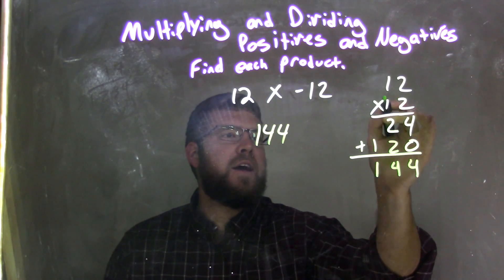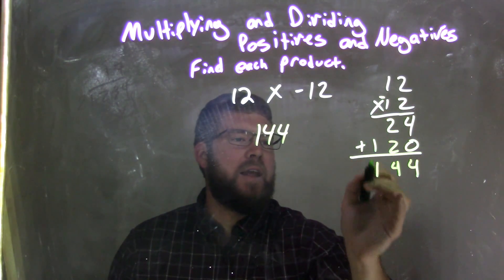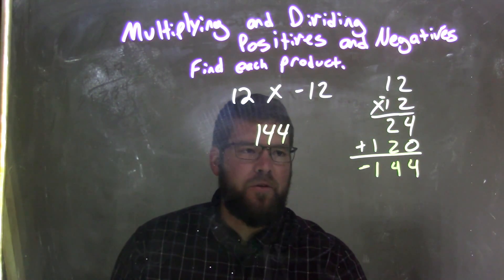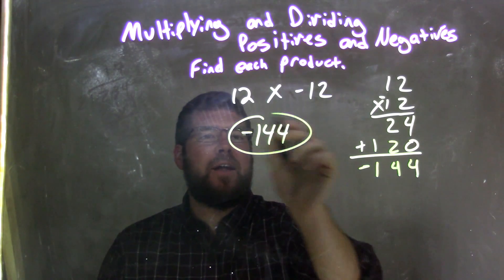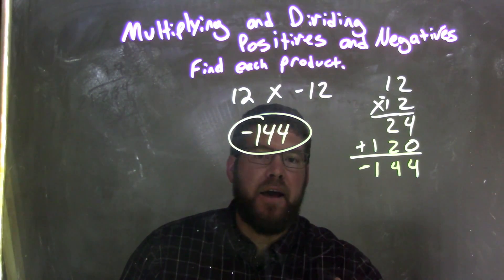Not our final answer, because our second one was negative, and so we have a negative here. Negative 144 is our final answer, because a positive times a negative is a negative.